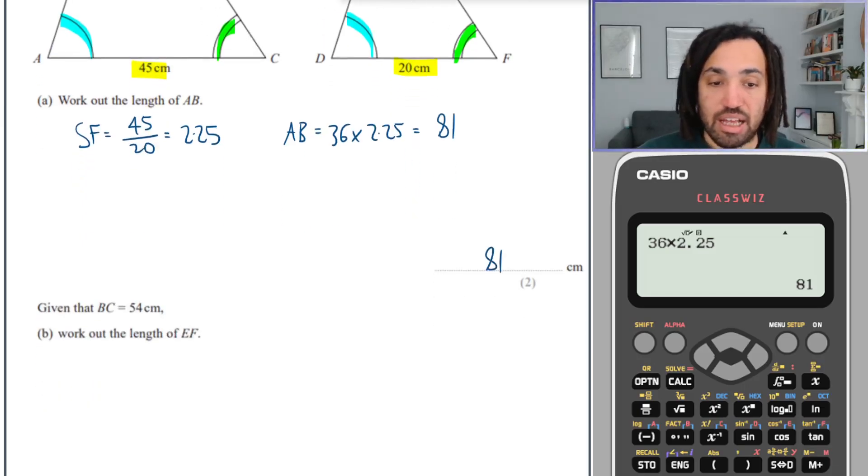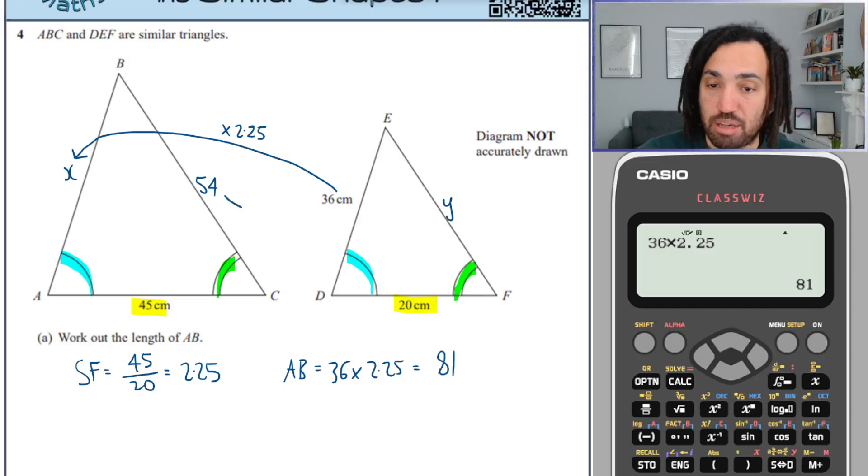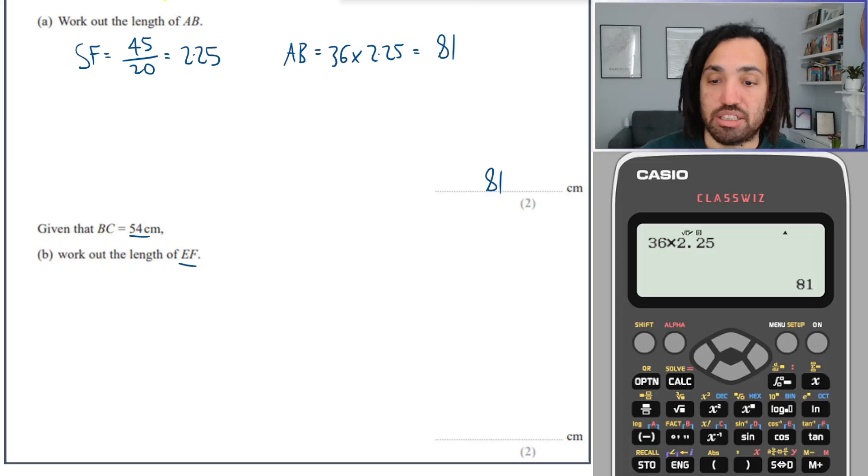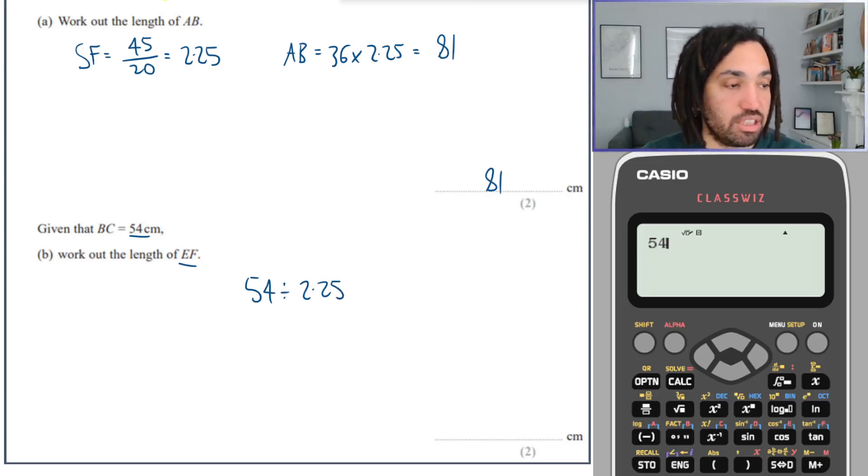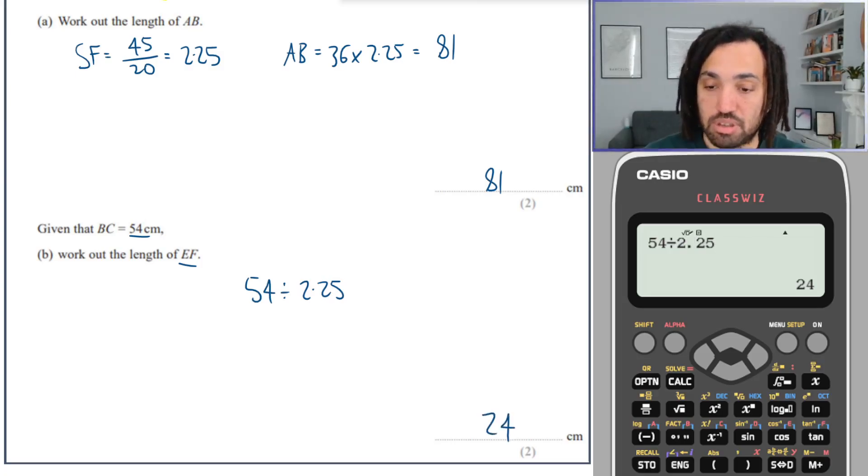Next we said that BC is 54, find EF. BC is this one, 54, find EF, let's call it y. Well this time I'm going from the larger one to the smaller one, which means I'm going to be dividing by the scale factor. So the calculation I need to do is 54 divided by 2.25. Again over to our calculator, I get 24. Lovely.